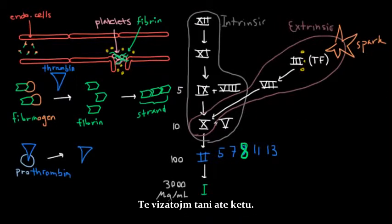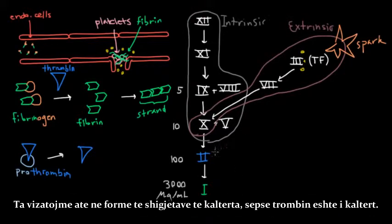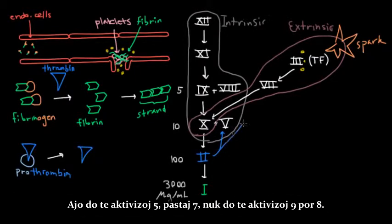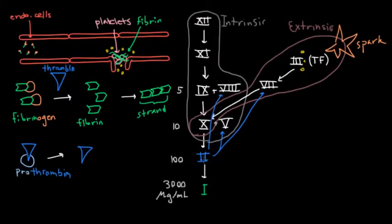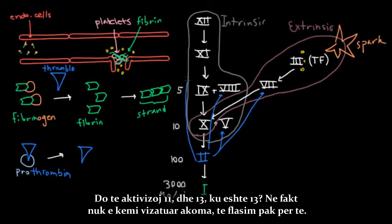So let's draw that in the form of blue arrows because thrombin is blue. We said it's going to activate 5. We said it's going to activate 7. We said it's going to activate not 9 but 8, so this will be an awkward arrow to draw. We said it's going to activate 11. And we said it's going to activate 13. Where's our 13? Well, we haven't actually drawn it in yet. So let's quickly chat about that.